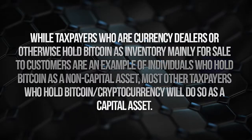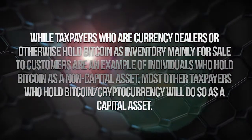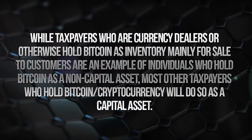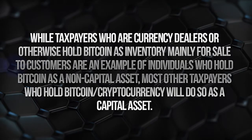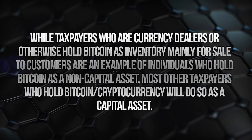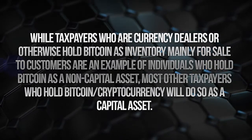Taxpayers that are considered currency dealers or otherwise hold out bitcoin as inventory, mainly for sale to the public, are an example of individuals who hold bitcoin as a non-capital asset. Most other taxpayers who hold bitcoin or cryptocurrency do so in its capacity as a capital asset. A capital asset will produce capital gains and losses, while an ordinary asset — inventory — will produce ordinary income.